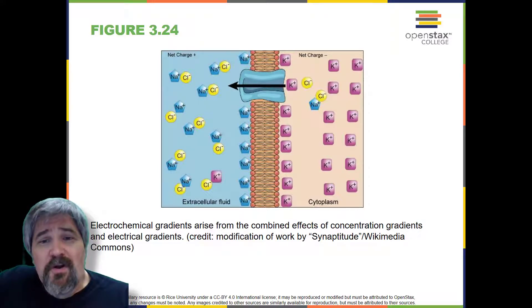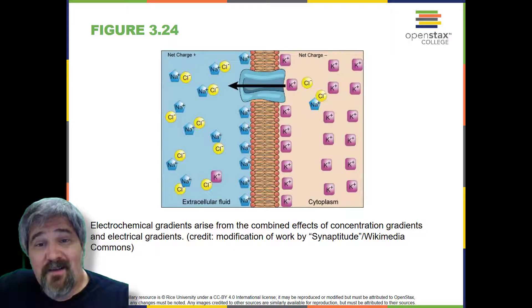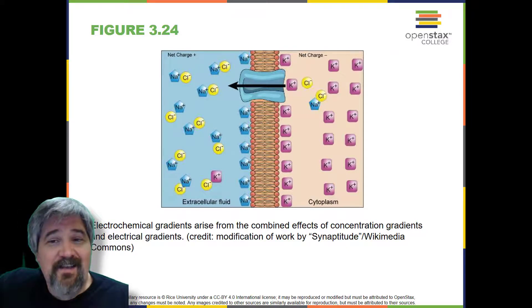The situation is more complex, however, for other elements such as potassium. The electrical gradient of potassium promotes diffusion of the ion into the cell, but the concentration gradient of potassium promotes diffusion out of the cell.